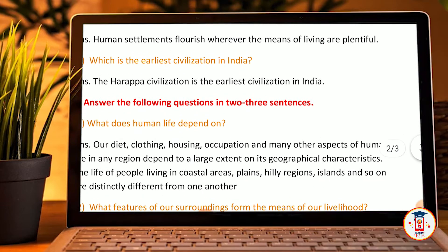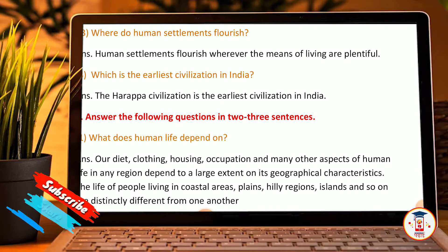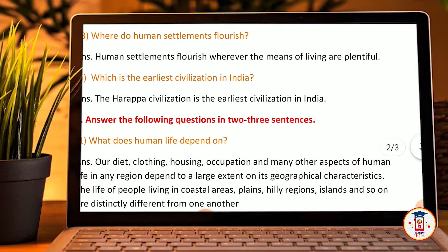Answer the following questions in two to three sentences. What does human life depend on? Diet, clothing, housing, occupation and many other aspects of human life in a region depend, to a large scale, on its geographical characteristics.